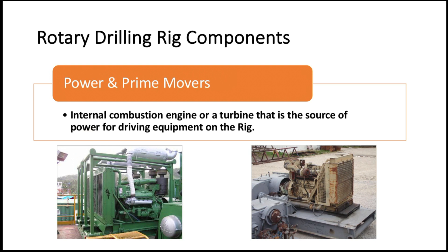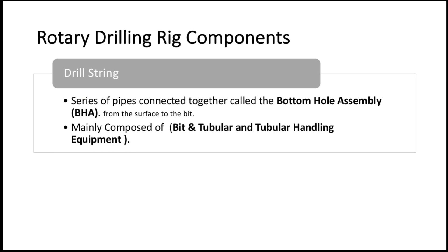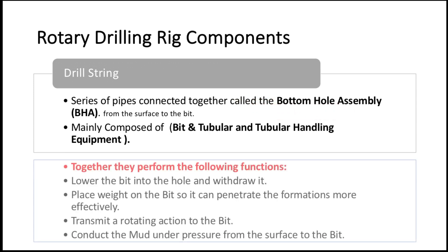As discussed in the first video, the main principle of drilling is to apply weight with rotation, so we need two systems: the drill string and the rotary system. The second system is the drill string. The term drill string describes the tubulars and accessories on which the drill bit is run to the bottom of the hole. The drill collar and other equipment made up just above the bit are collectively called the bottom hole assembly, or BHA.